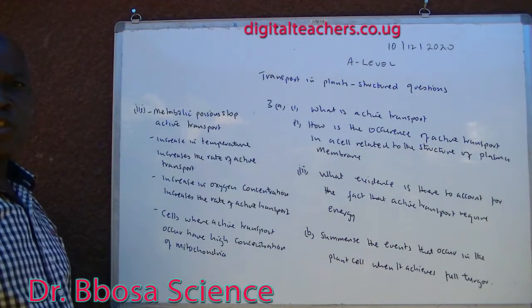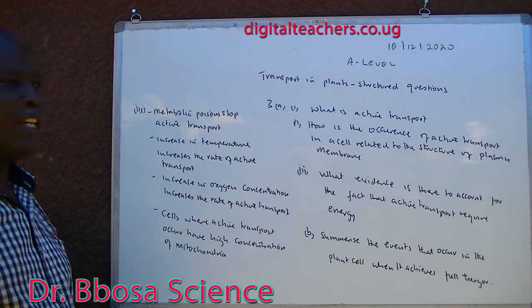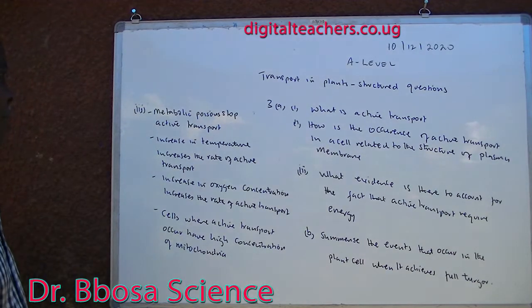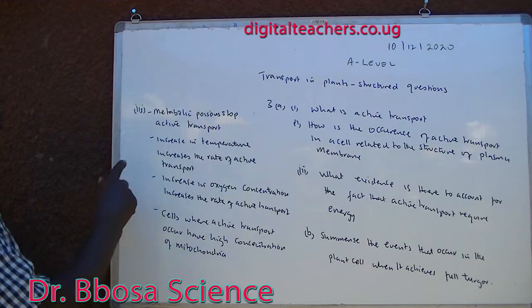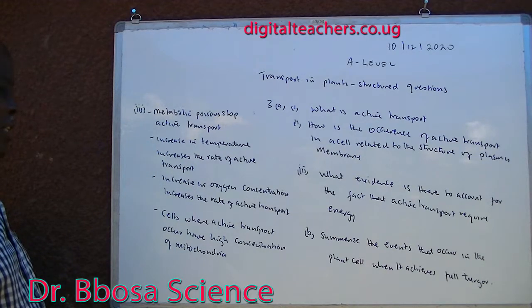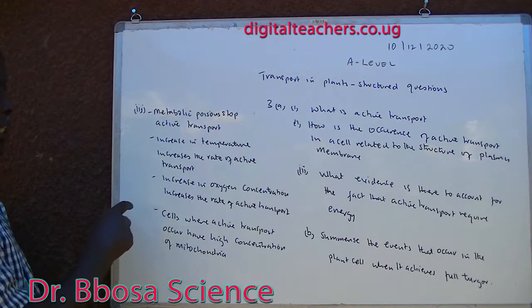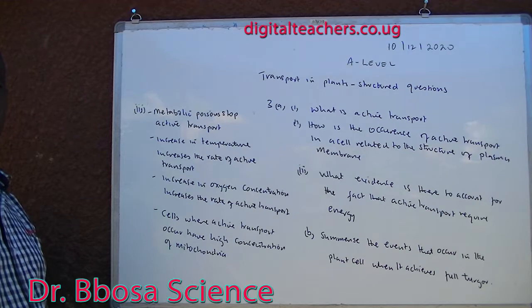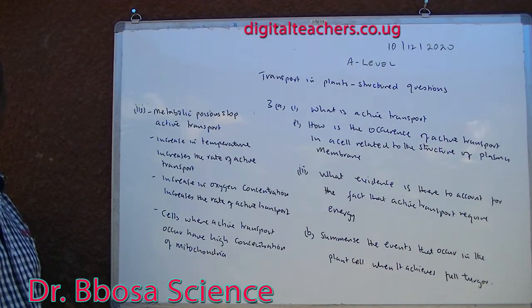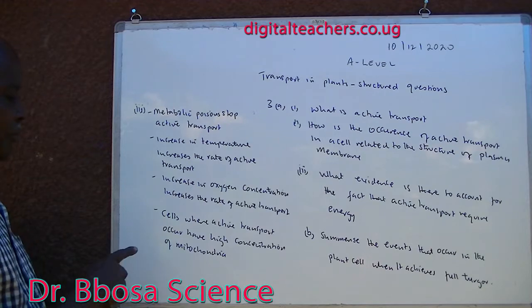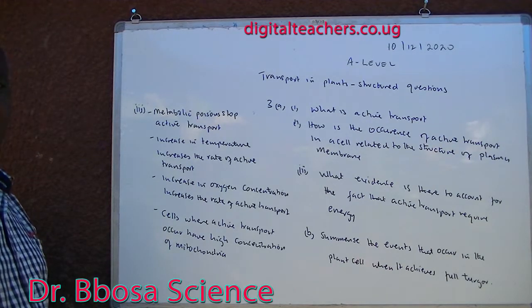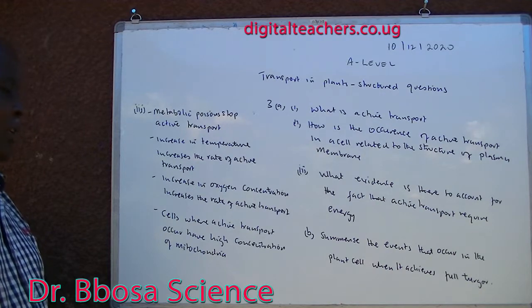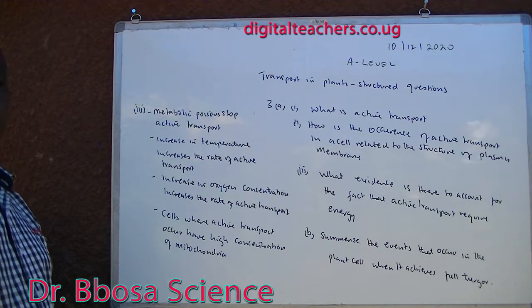Evidences that show that active transport requires energy are: one, metabolic poisons stop active transport. Two, increase in temperature increases the rate of active transport. Three, increase in oxygen concentration increases the rate of active transport. Cells where active transport occurs have high concentration of mitochondria.